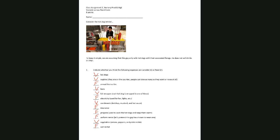To recap: hot dogs, napkins, buns, foil wrappers, condiments, and vegetables are variable; the license fee, electricity, insurance, propane, uniform rental, and cart rental are fixed. Those look correct. Let's move to the second page.